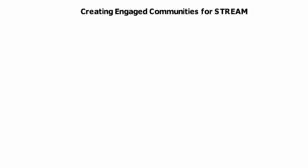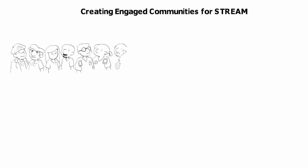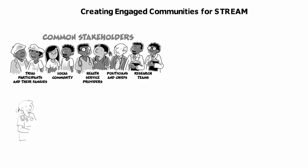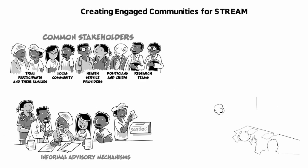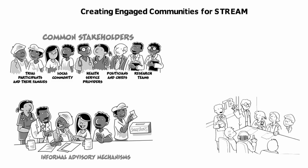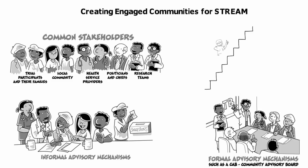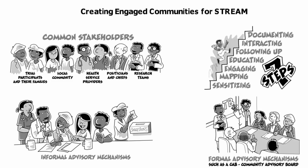If you identify and engage all of the right members of the community, ensure informal and formal advisory mechanisms are in place, and follow the seven steps, you will meet the standards set forth by global tuberculosis and research communities for successful community engagement.